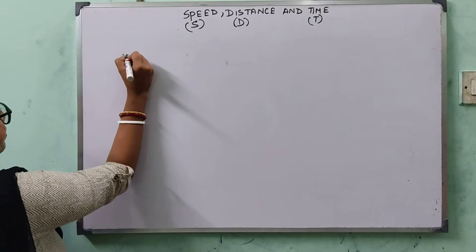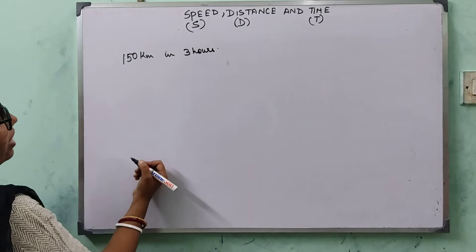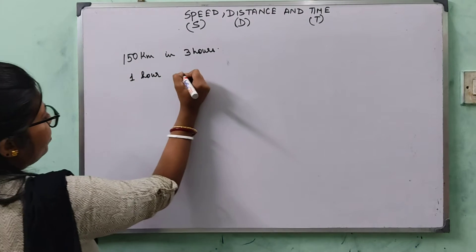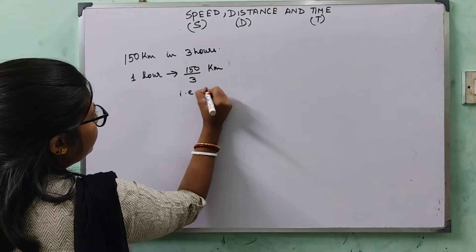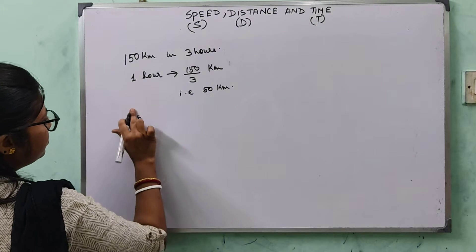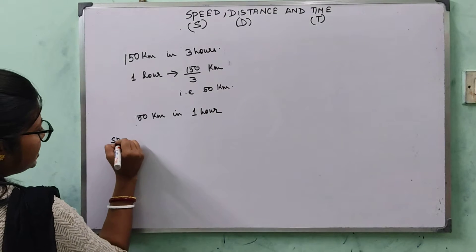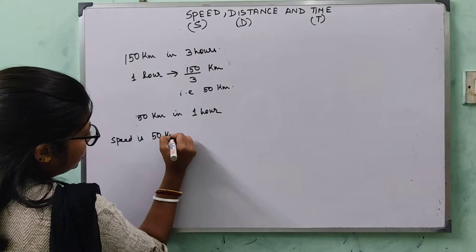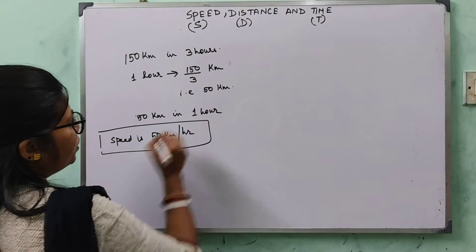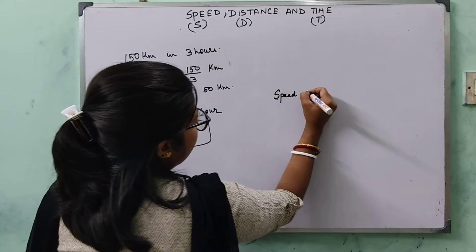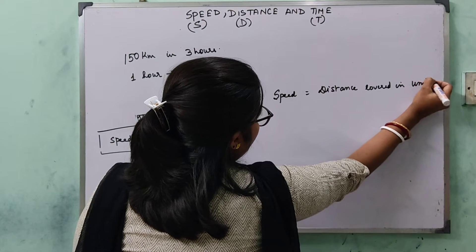Suppose I say I travelled 150 km in 3 hours. So what is the distance I travelled in 1 hour? In 1 hour I will be travelling 150 divided by 3 km, that is 50 km. That means I travelled 50 km in 1 hour, so my speed is 50 km per hour. Speed is the distance covered in unit time.